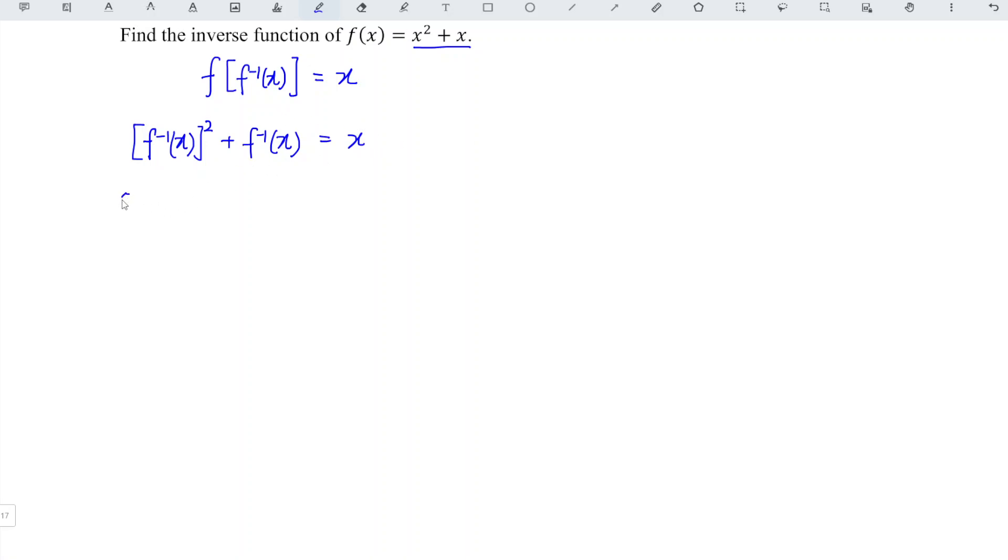Now we should rearrange the equation. So we obtain inverse square plus inverse minus x is equal to 0.